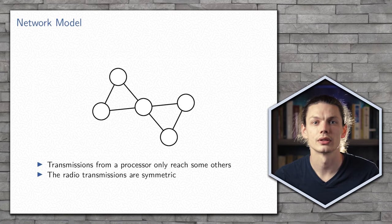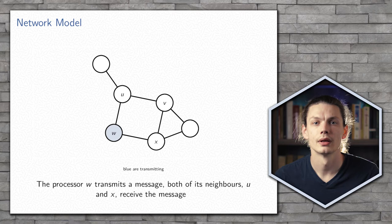Now we'll look at some examples of these transmissions in the network. Here, the processor W is transmitting, and no other processor is, so all of its neighbors receive its message.